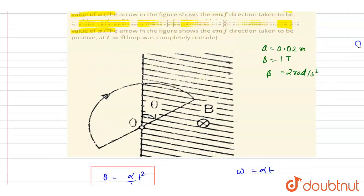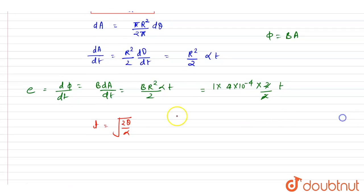If you see here alpha is 2, so it will be under root of theta only. So the time taken for half rotation, for each half rotation, t1 will be equals to under root of pi.